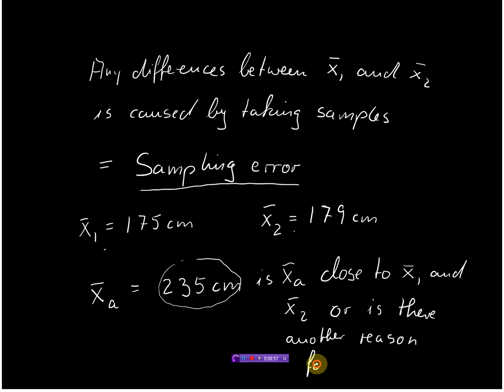It could very well be that there was a basketball team on campus which not necessarily were students, and I measured just by chance this sample and I got this group here. And therefore I can say then, if this is not just due to sampling error, I must have taken a different group. So this is what it's all about.